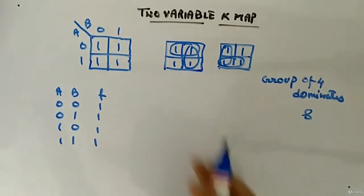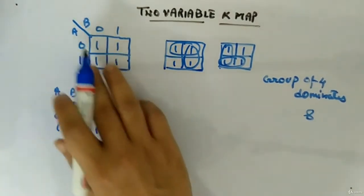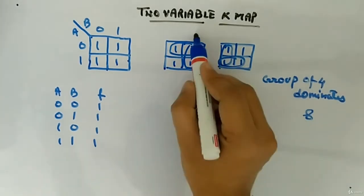We will see in the future that if you will go for more variables, then pair of eight will also come. So right now if you will see, you can make this kind of pair, two pairs, or this kind of pair. These are all wrong.